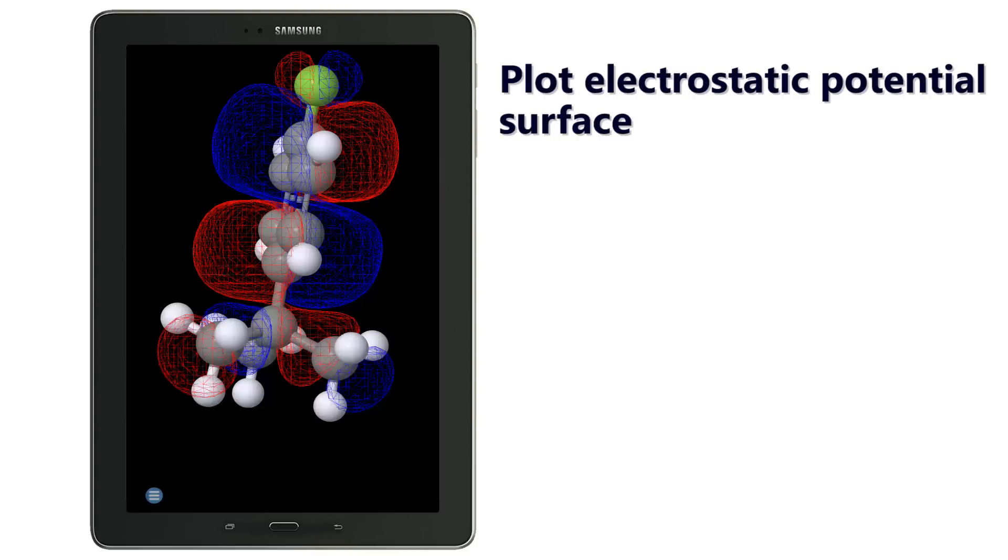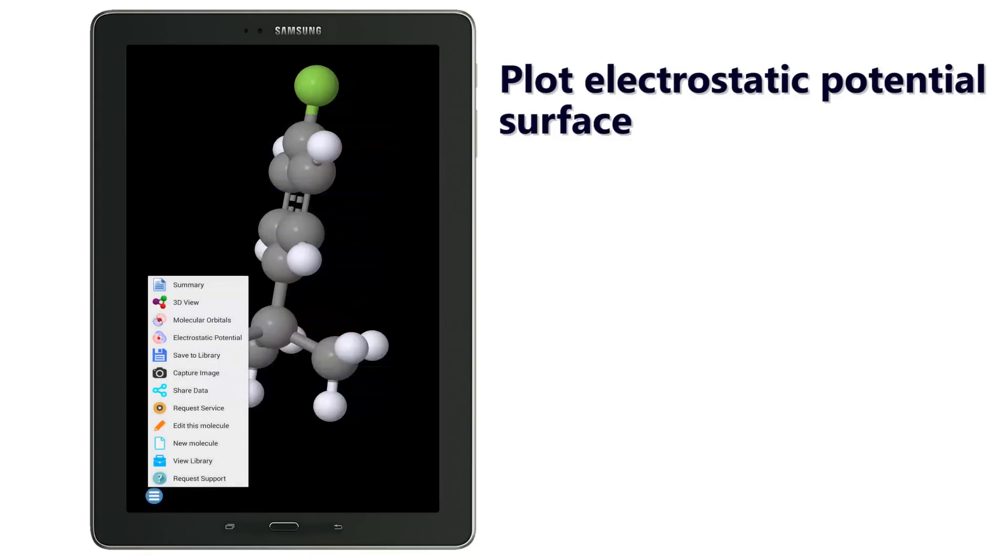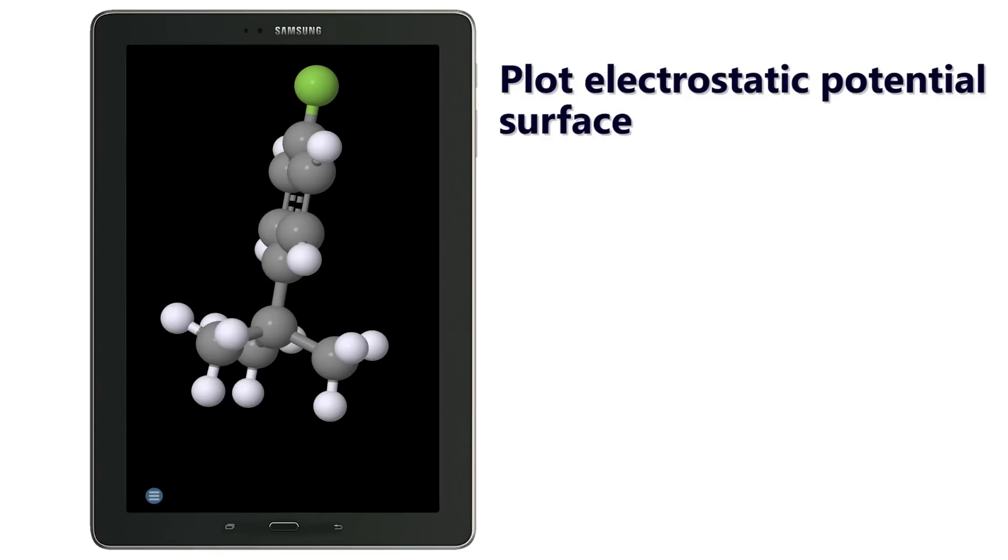Tap on the back button on your phone to get back the 3D window for analyzing other data, such as plotting the electrostatic potential surface.